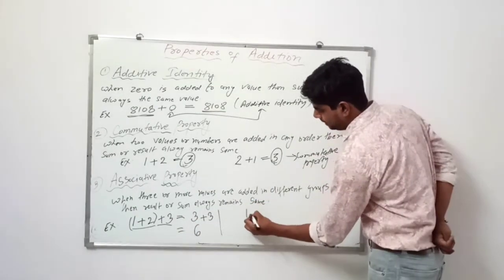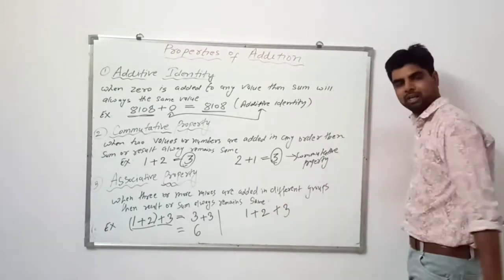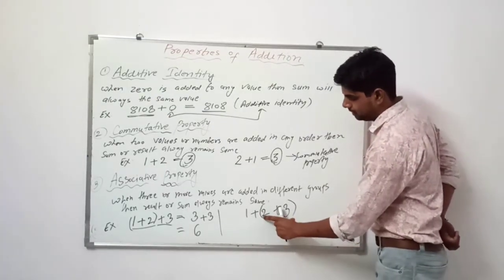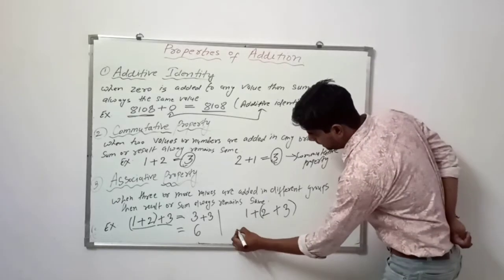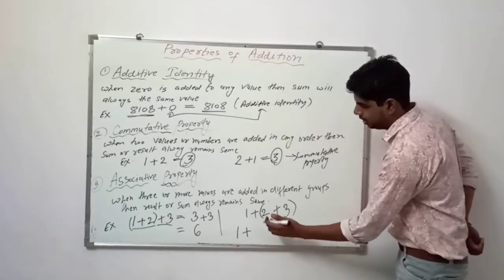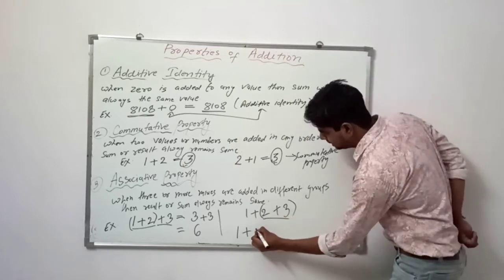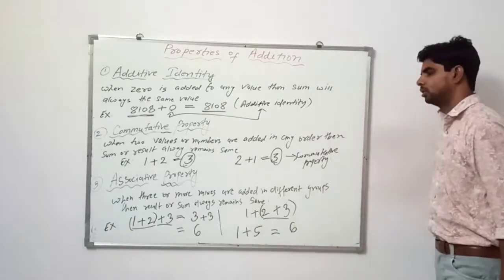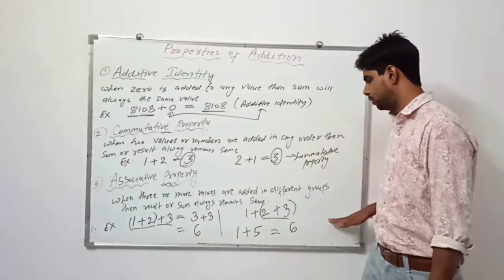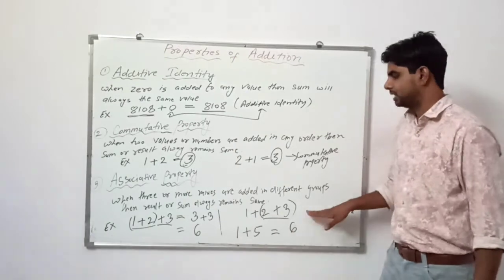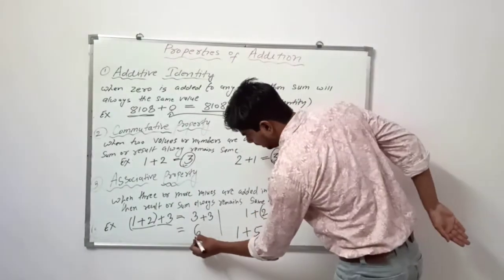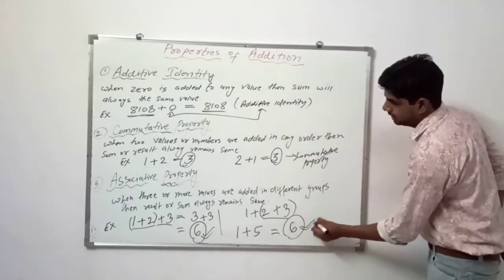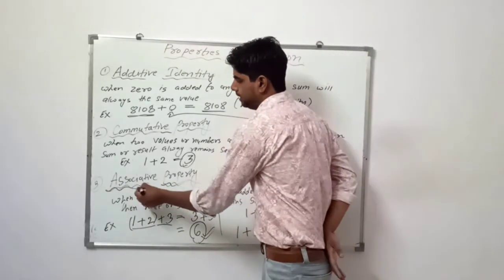In the second case, we again have the same three numbers: 1 plus 2 plus 3, but now we group 2 plus 3. So 2 plus 3 equals 5, and then we add 1 to it, giving an answer of 6. Even though we made different groups — first solving 1 plus 2, then solving 2 plus 3 — the answer remains the same: 6 in both cases. This is the Associative Property.